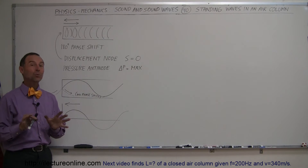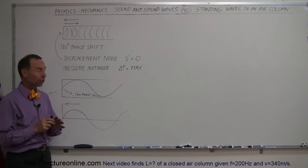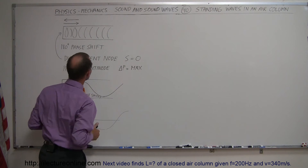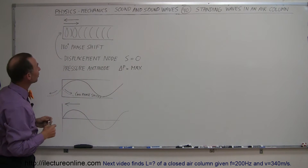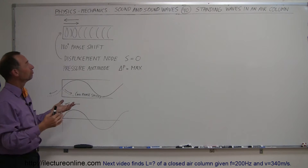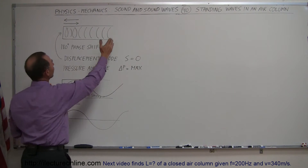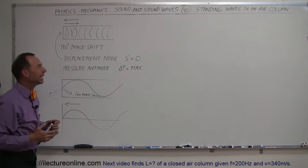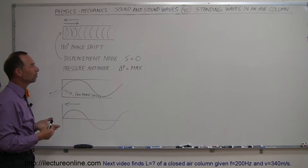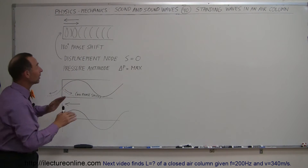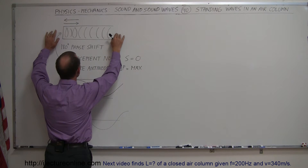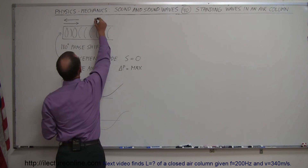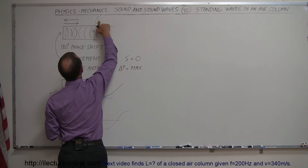Here we're going to talk about standing waves in air columns. We have an open container like a pipe that's open on one side and closed on the other — that's considered a closed pipe situation. We also have situations where pipes are open on both sides, which would be considered an open pipe. This is an example of a closed pipe.